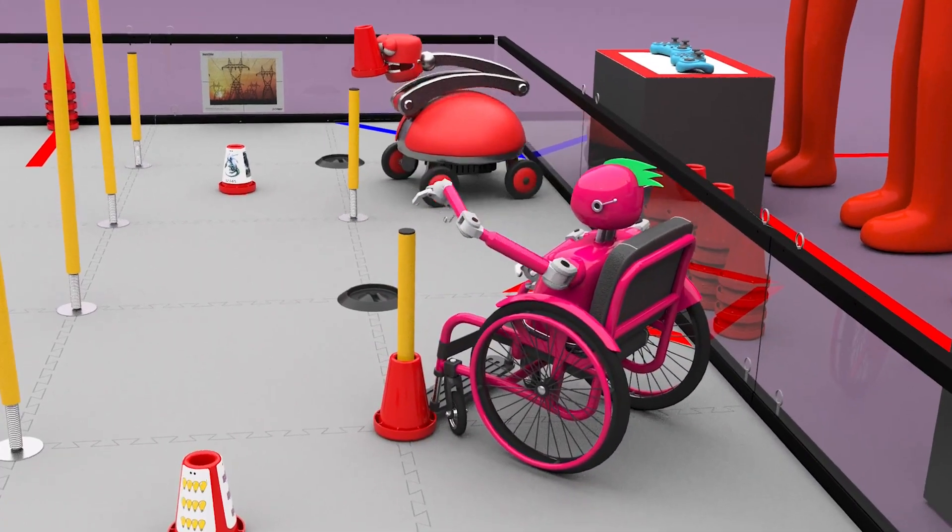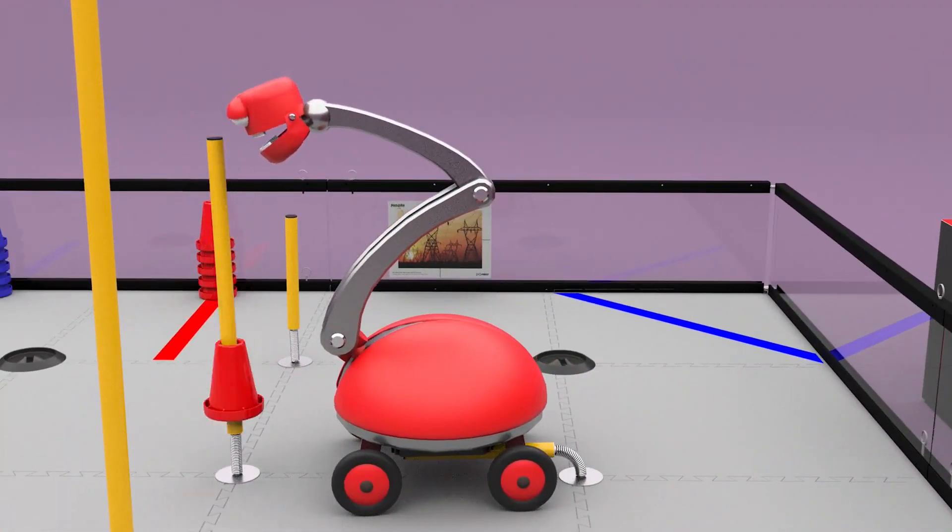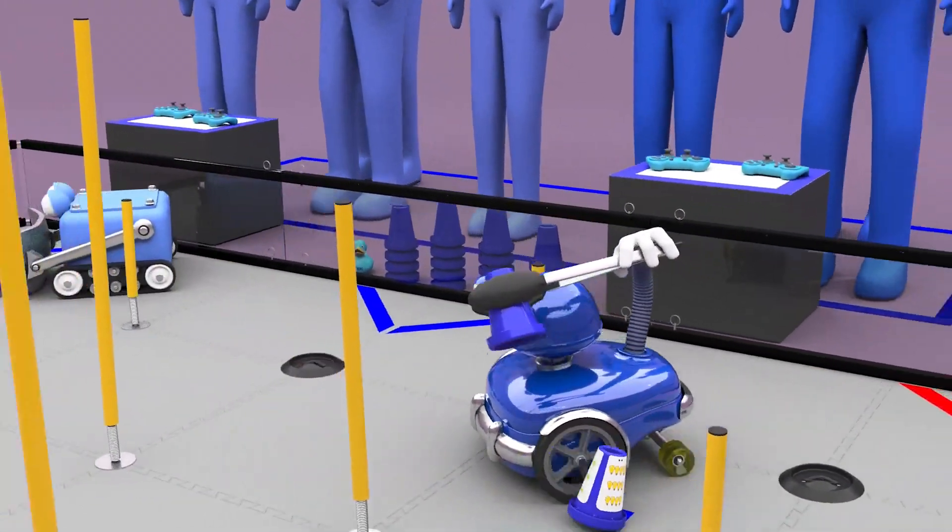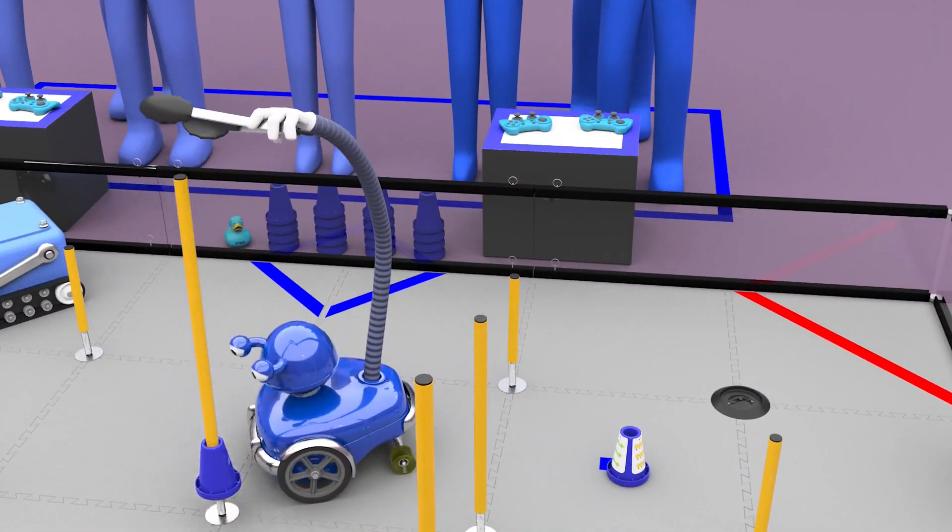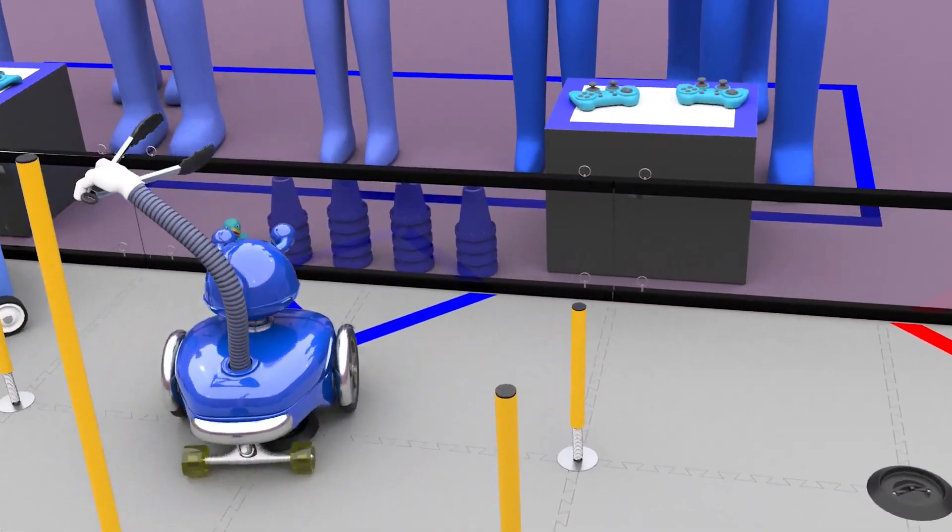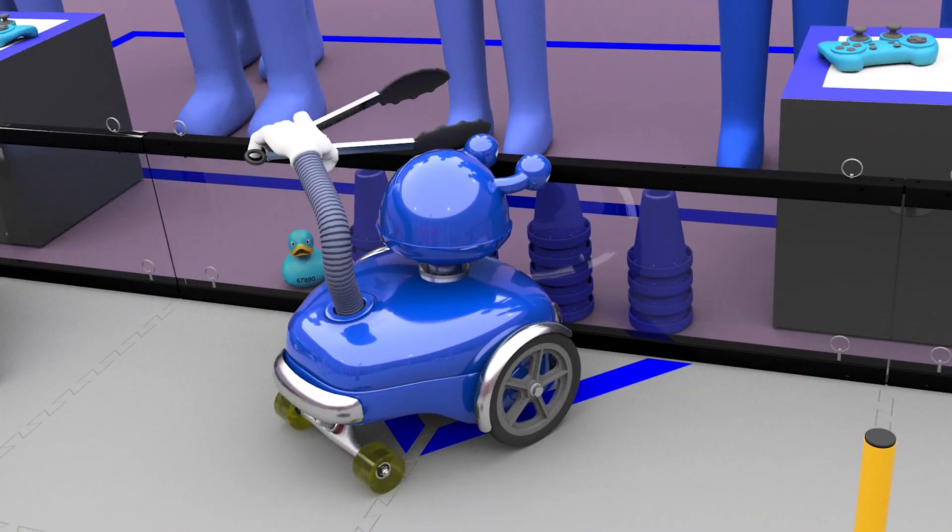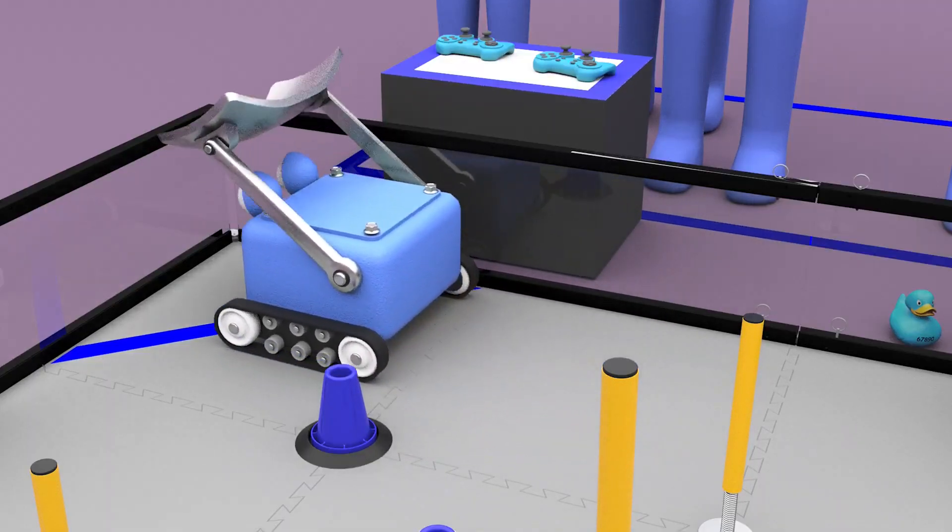Two points for the ground junction, three points for the low junction, four points for the medium junction, and five points for the high junction. A robot parked in their alliance substation or terminal earns two points.